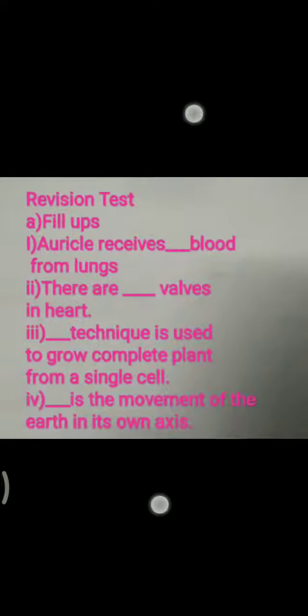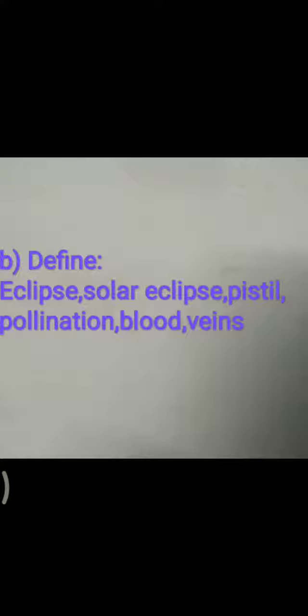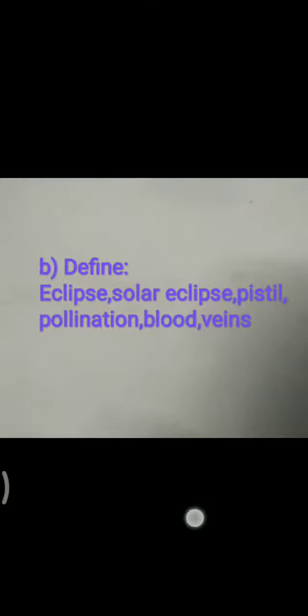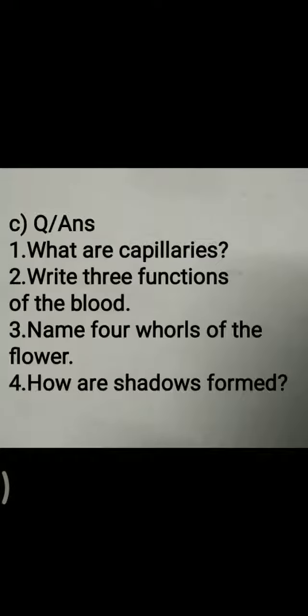Part B: Define eclipse, solar eclipse, pistil, pollination, blood veins.